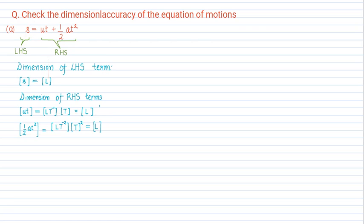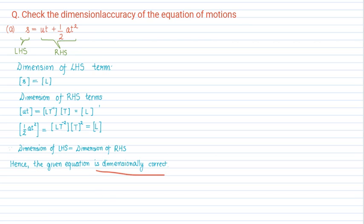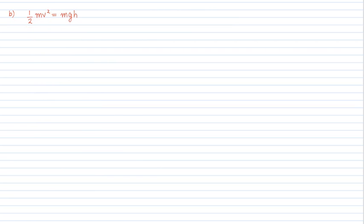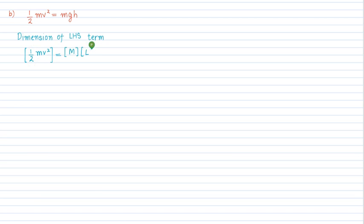Since all terms have the same dimension L, this equation is dimensionally correct. Now let's take a second example: ½mv² = mgh. For the left-hand side, ½ is a constant with no dimension. The dimension of mass m is M, and the dimension of velocity v is LT⁻¹, with a square, so we write (LT⁻¹)².